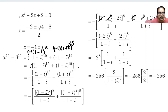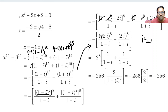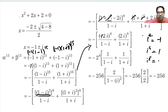So the entire expression becomes: (minus 2i) whole power 8 divided by (1 - i), plus (2i) whole power 8 divided by (1 + i). Now, (minus 2) whole power 8 equals 2 power 8, so the minus sign does not matter. Bringing 2 power 8 outside, we are left with i power 8. Since i² = minus 1, i⁴ = plus 1, and i⁸ = plus 1. Taking 2⁸ common, we get 2⁸ times 1 over (1 - i) plus 1 over (1 + i).